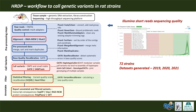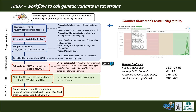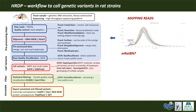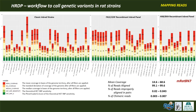We followed the Genome Analysis Toolkit best practices recommendations of the Broad Institute team. Data preprocessing steps involve marking adapter sequences, alignment to the new rat genome reference mRatBN7, and marking duplicates. Mapping reads to the genome reference allows us to evaluate the coverage and performance of the whole genome sequencing.